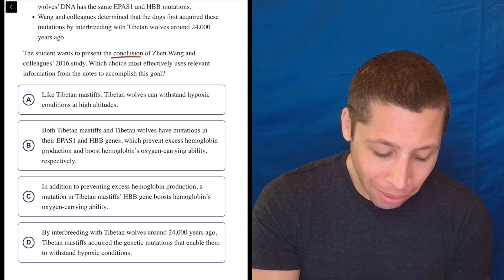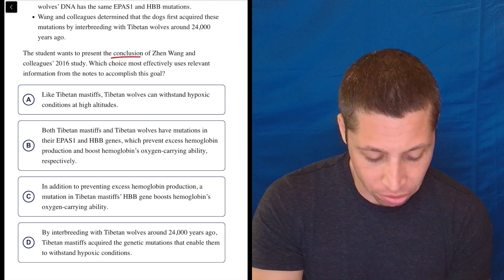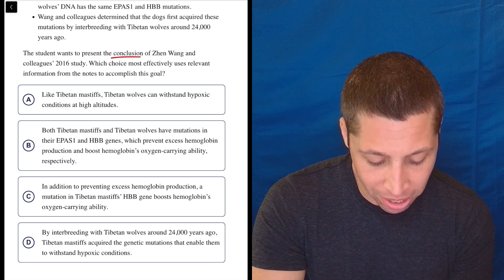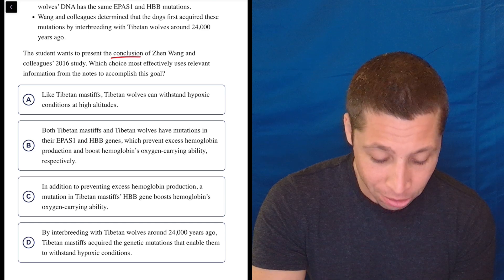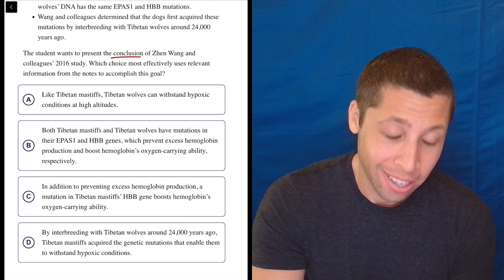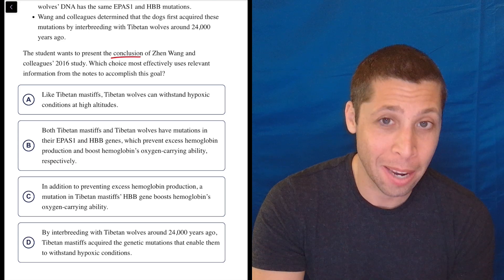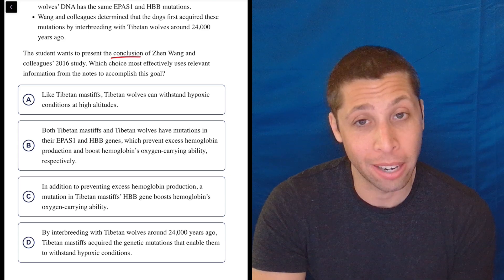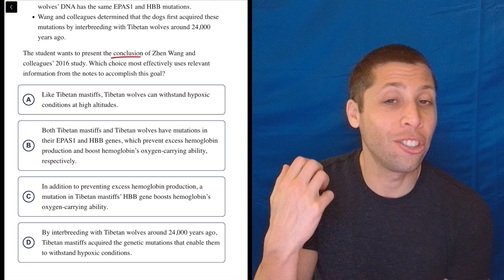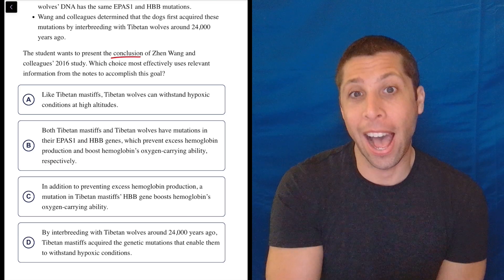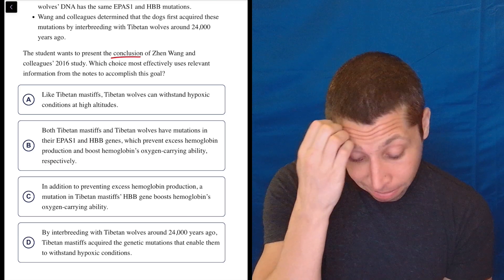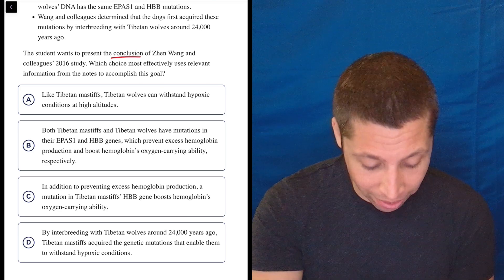D, let's read that. By interbreeding with Tibetan wolves around 24,000 years ago, Tibetan Mastiffs acquired the genetic mutations that enabled them to withstand hypoxic conditions. We've got the same problem. This is annoying. I was expecting a choice to just say they concluded that. That's how these usually go. But it didn't work out. Here's what we got to do.